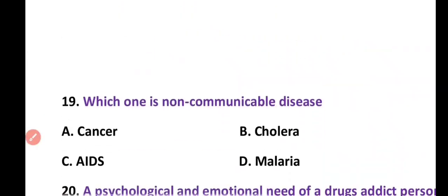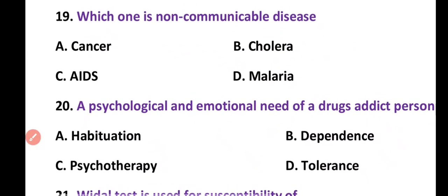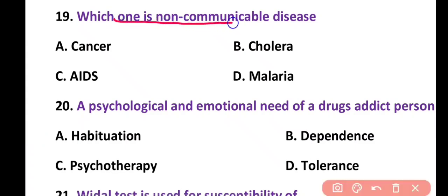Question 19. Which one is a non-communicable disease? Cancer, cholera, AIDS, or malaria. Correct answer is option A. Cancer is a non-communicable disease among the given options.